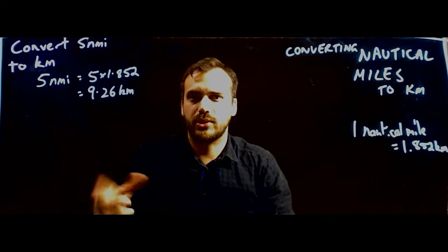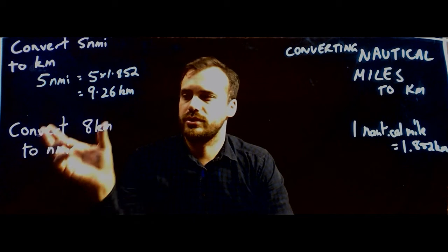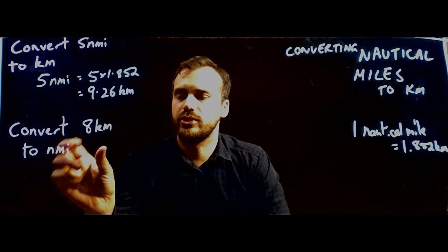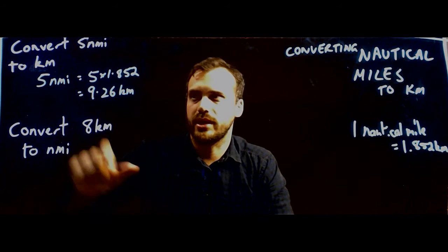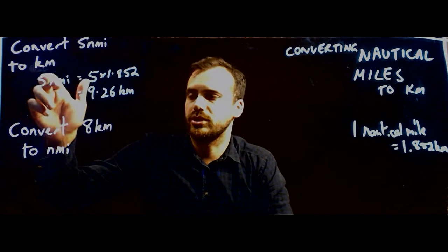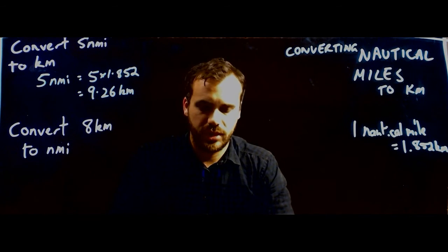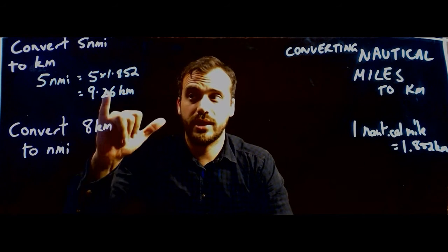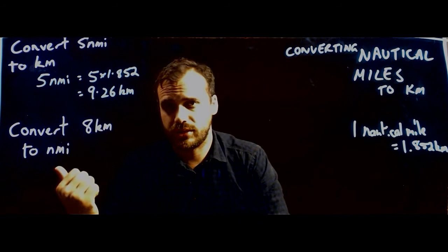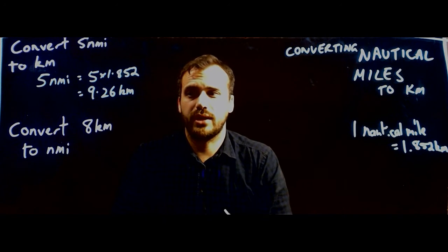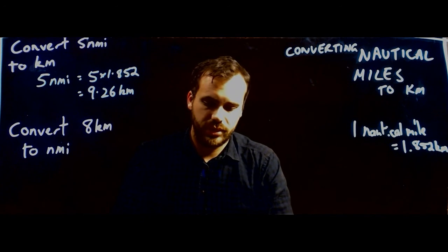Of course, there's a second type of question where we reverse this. Here's our question: convert eight kilometres to nautical miles. This time we're going back the other way — before we were doing nautical miles to kilometres, now we're doing kilometres to nautical miles. Since we multiplied going one way, going back the other way we're going to have to do the opposite: we're going to have to divide.